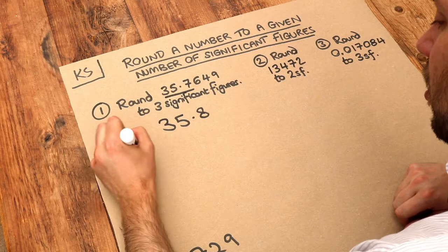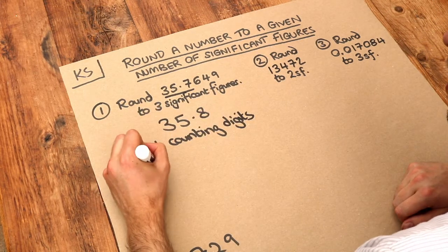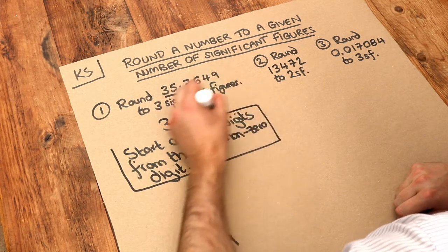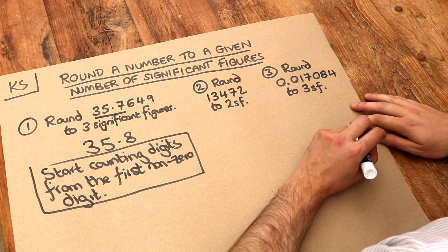So just to note that we start counting digits from the first non-zero digit. What about this second one? Round 13,472 to two significant figures.